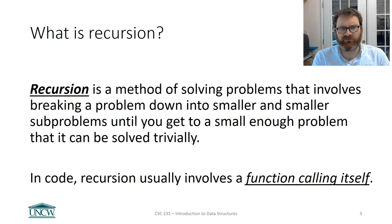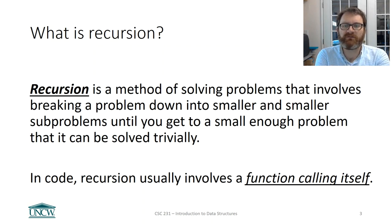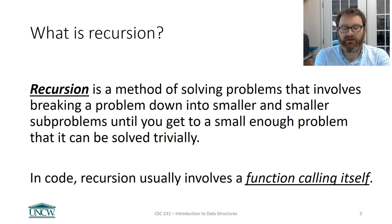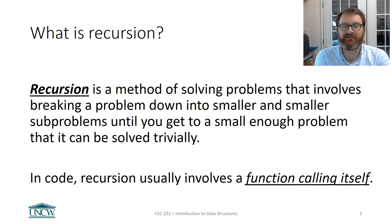So what is recursion? Recursion is a method of solving problems that involves breaking a problem down into smaller and smaller pieces until you get to a small enough problem that you can solve easily. When you have recursion in code, what you are talking about is writing a function or method that does something, and that function calls itself inside itself.